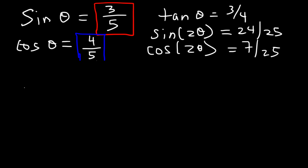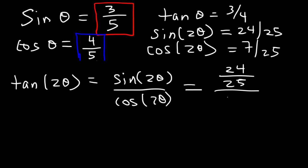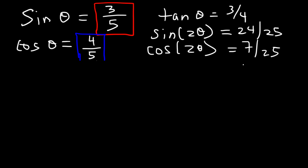Next we need to find tangent 2θ. There are two ways to find it and I'll show you both. The first method uses the quotient identity: tangent equals sine divided by cosine. So tangent 2θ = sine 2θ / cosine 2θ = (24/25) / (7/25). The 25s cancel, giving us tangent 2θ = 24/7.